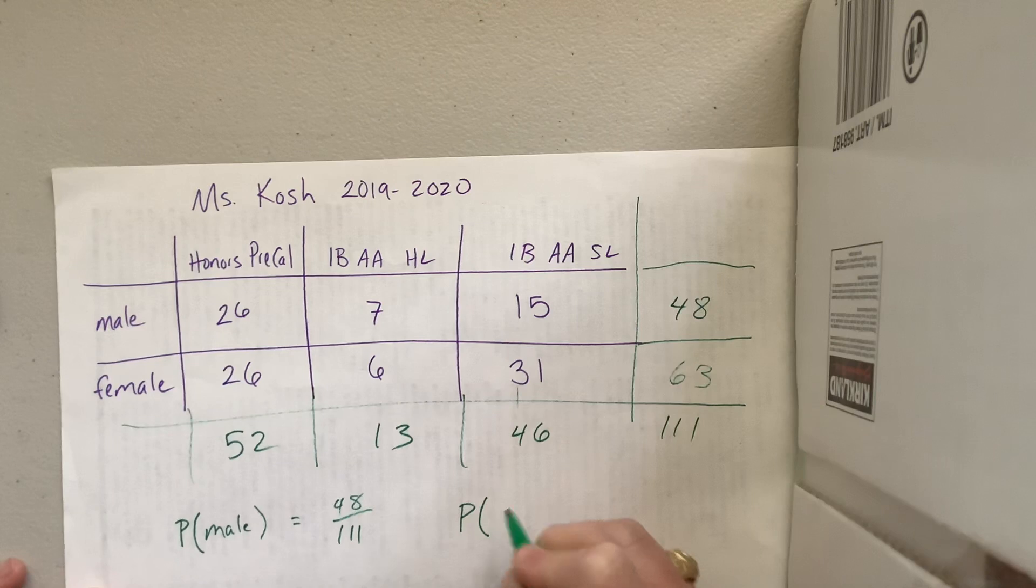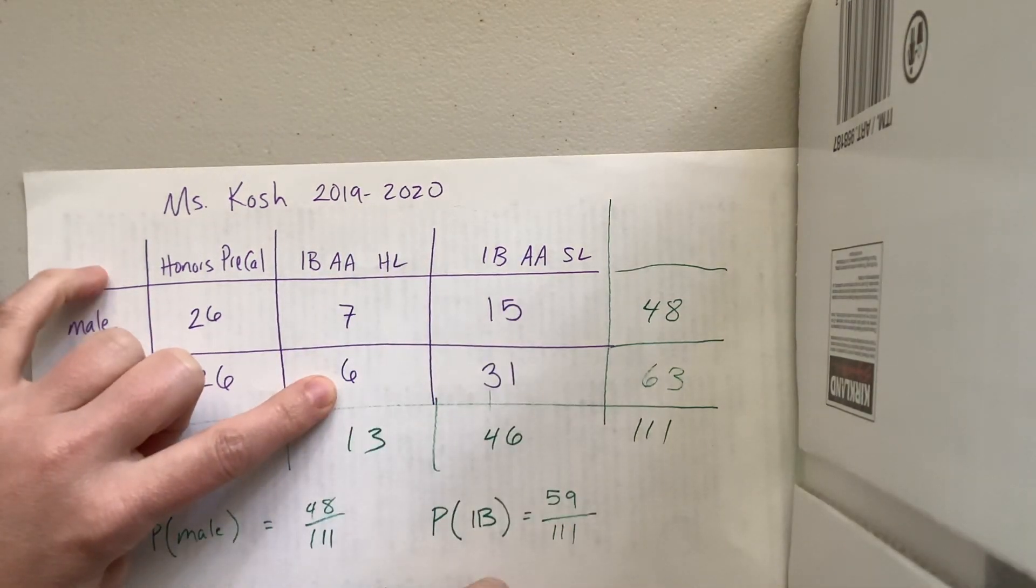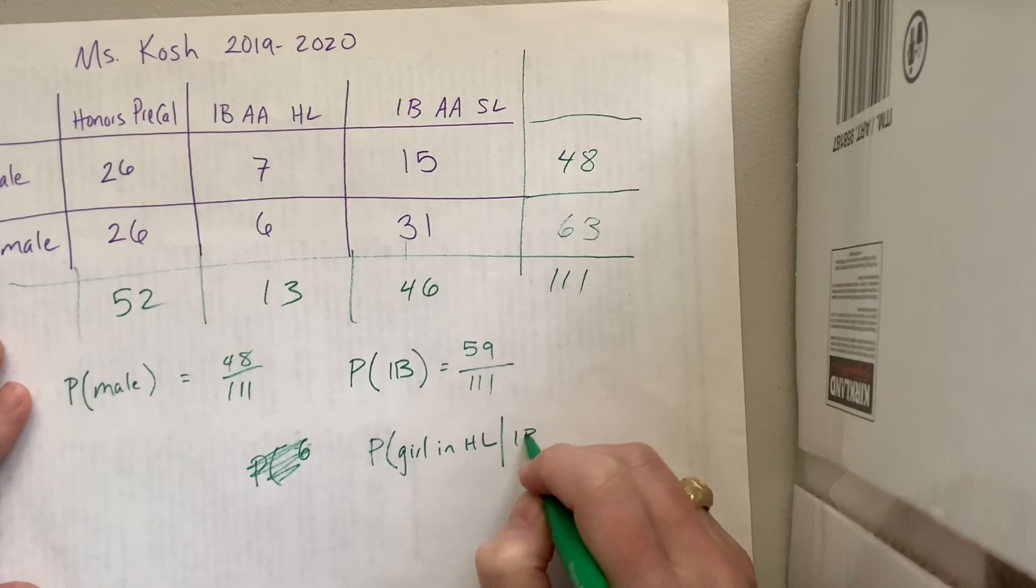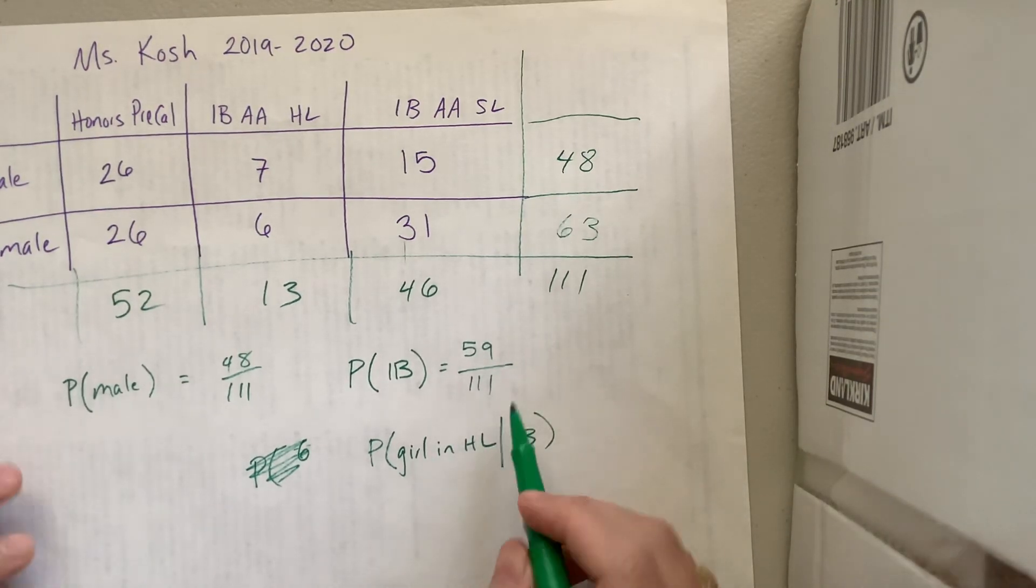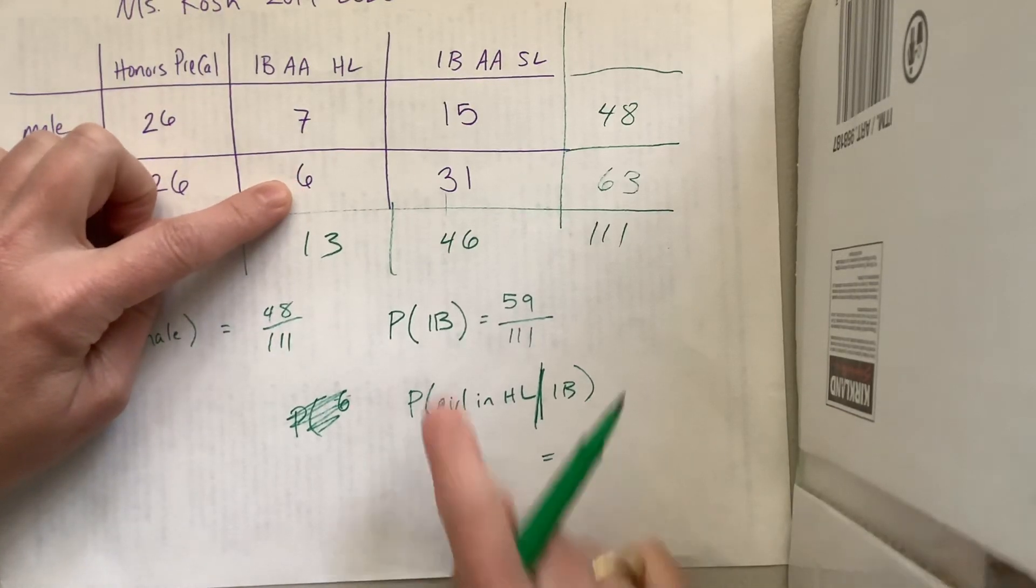So I may say, what's the probability of a random student being male? And so then it's 48 out of that total 111. I may say, what's the probability that they're in IB? If you pick one of the current Miss Kosh students, what's the probability that it's an IB student? We add this together and we'd get this 59 out of 111. I might say, what's the probability that out of my IB kids, I would pick a girl in HL? The probability of a girl in HL given is kind of this notation, we draw this line given they're in IB. This would be, we said that there were six girls in HL out of my total 59 IB students.